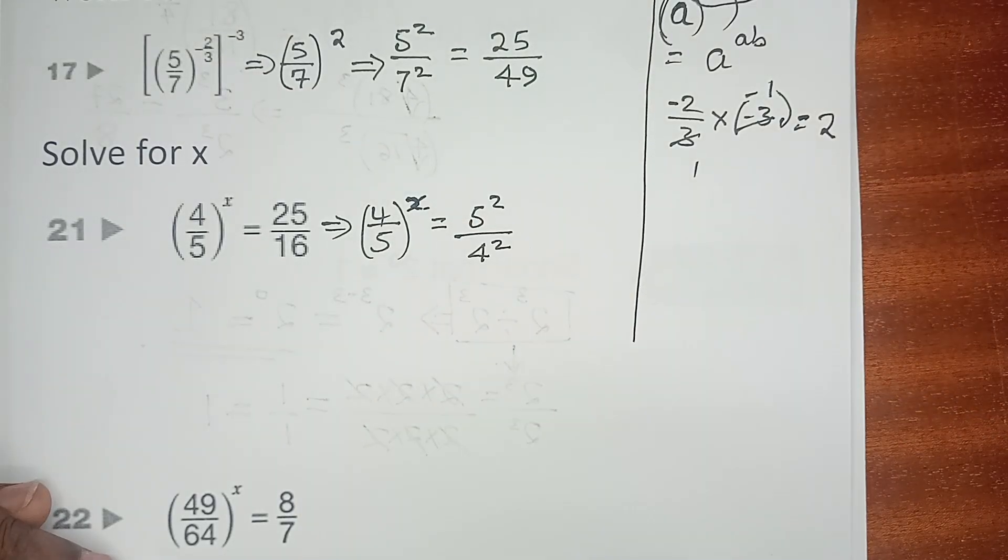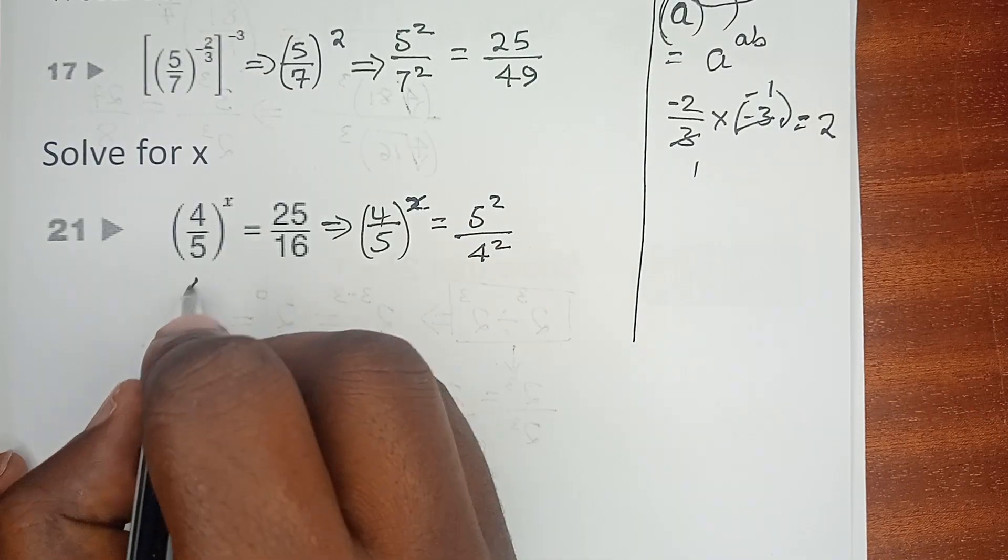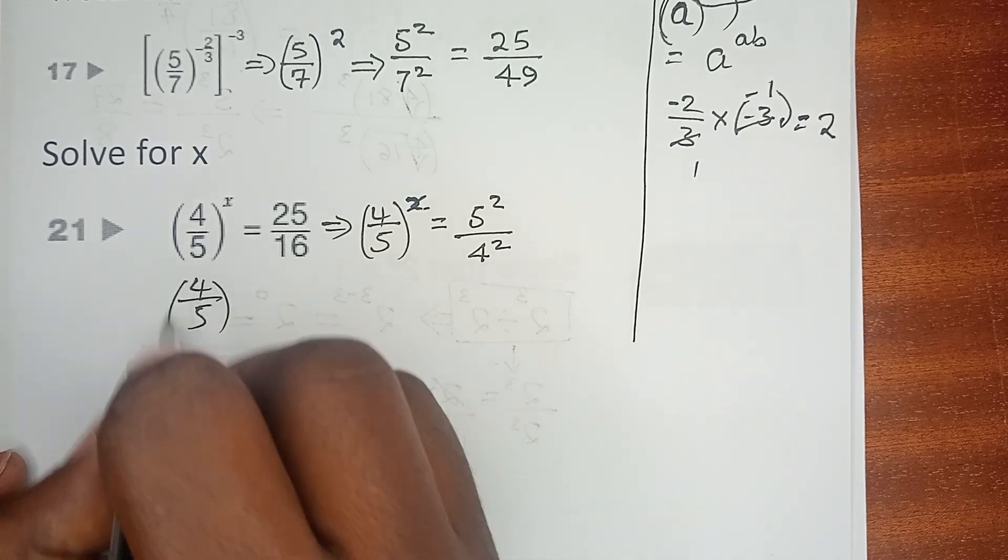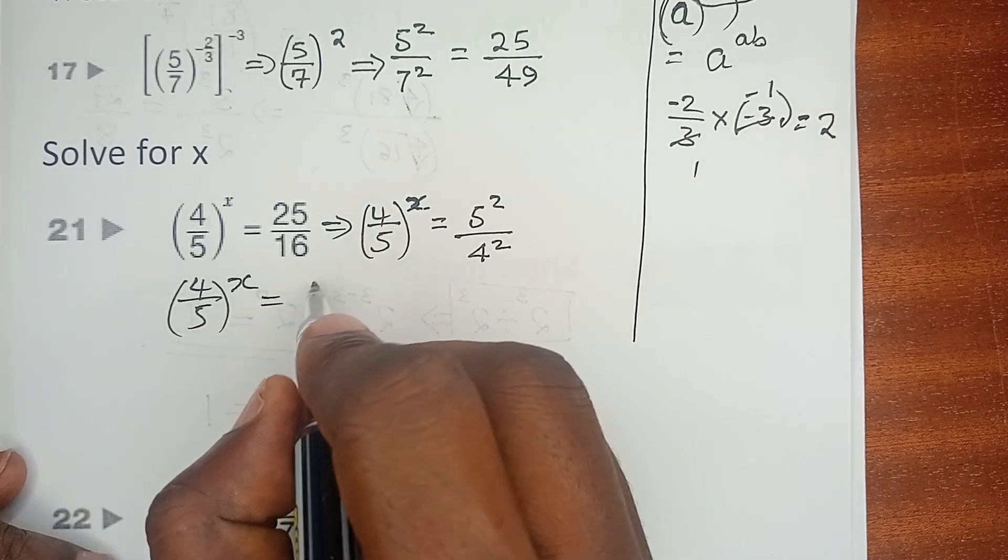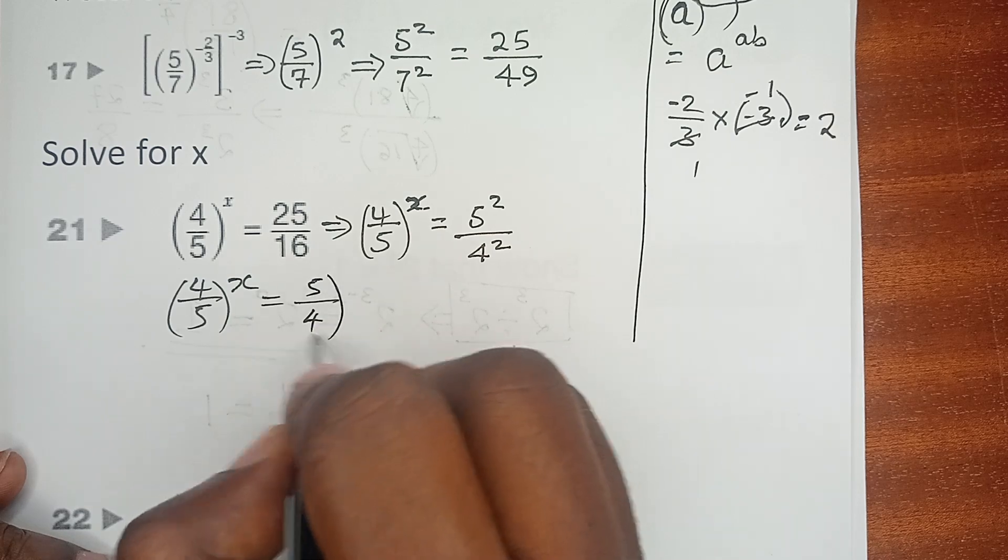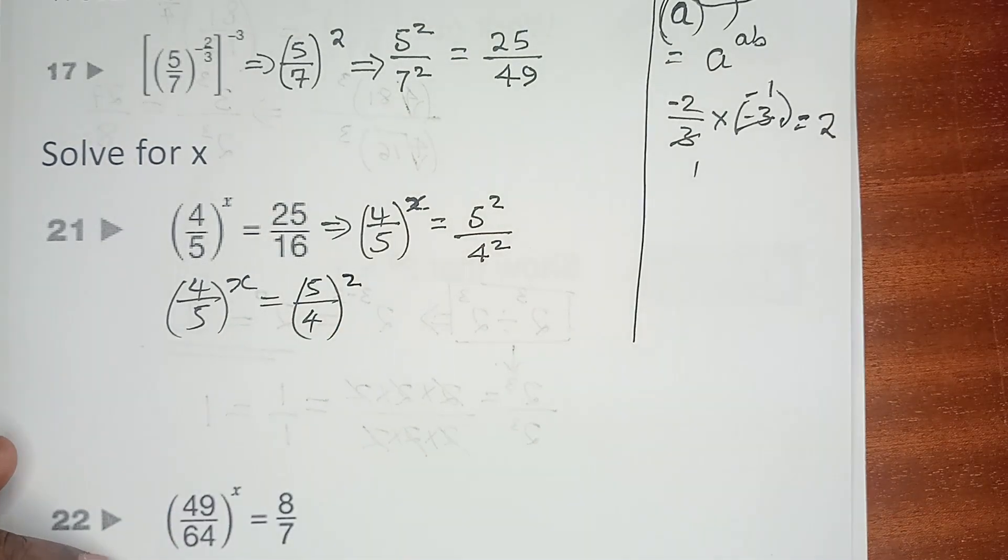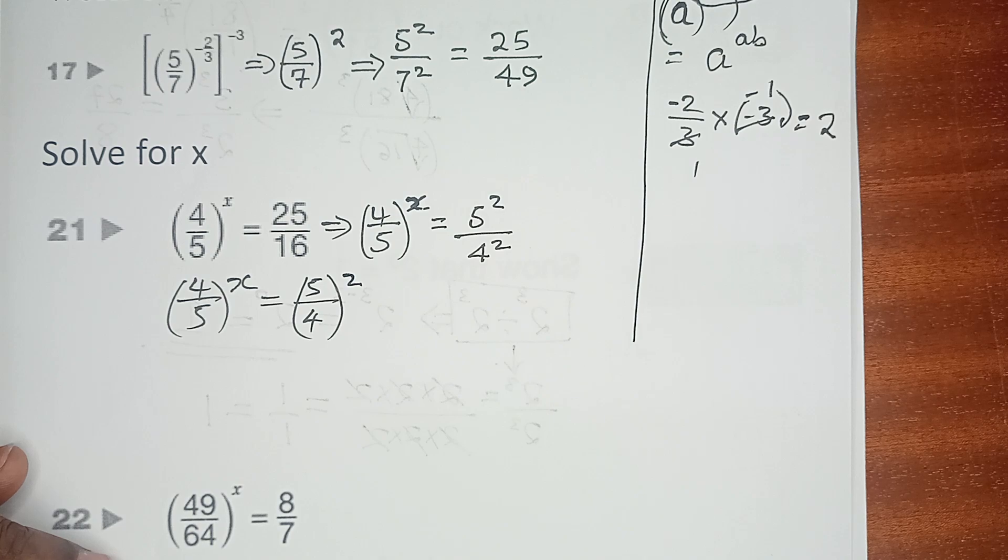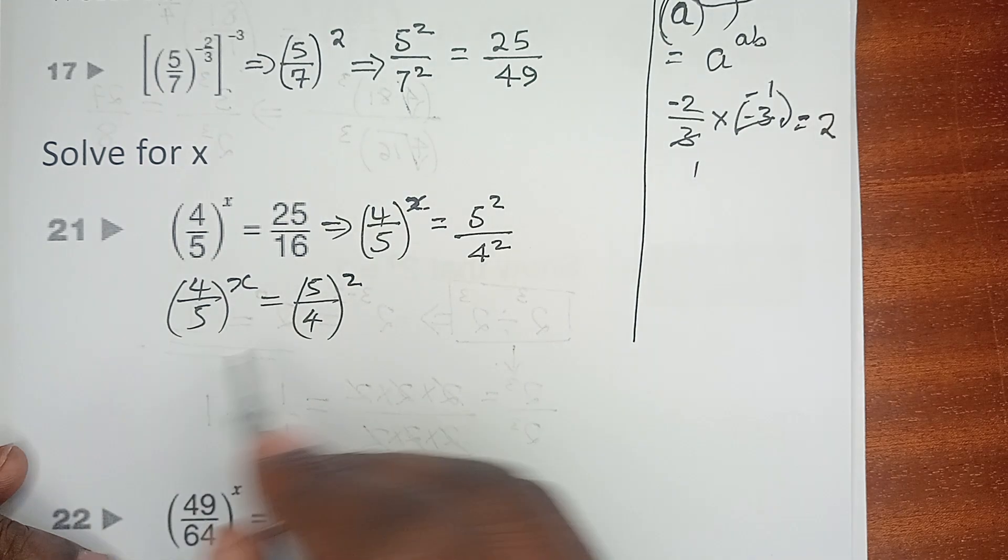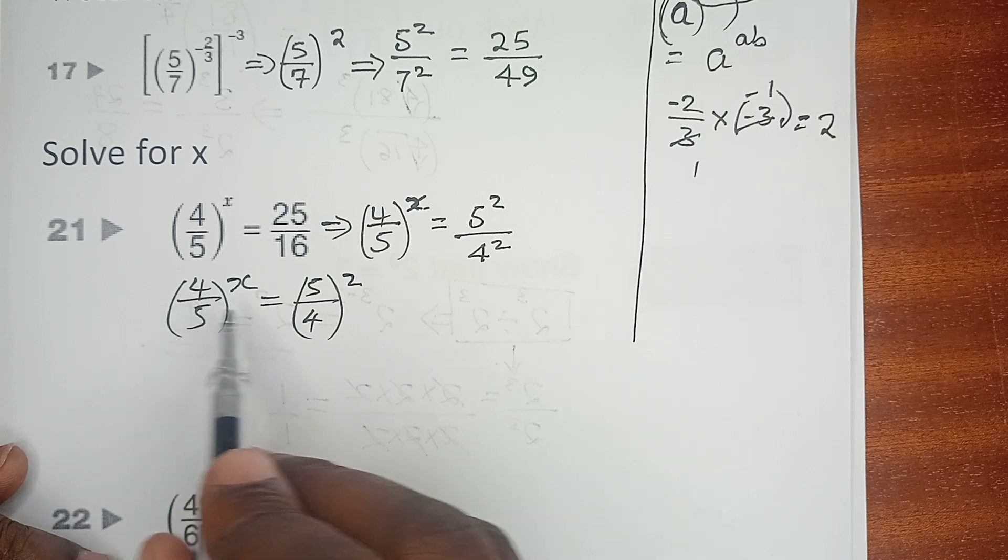So we can have it this way: (4/5)^X equals (5/4)^2. And you can now see, we simply need to flip either of the two so that they can be equal.